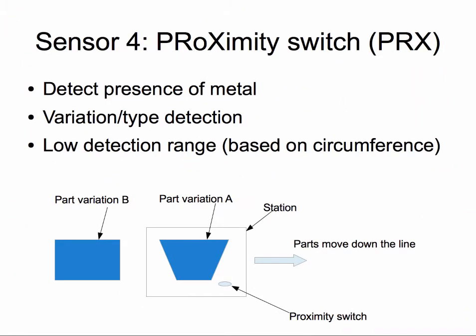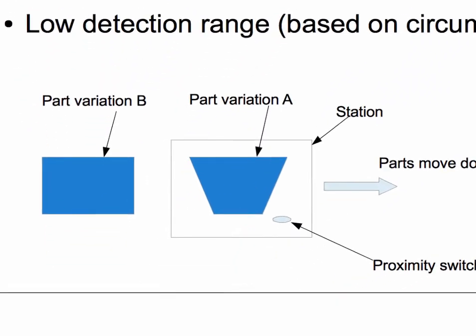The fourth one is the proximity switch, which detects metal when it is close. The range can be up to approximately 30 millimeters and is based on the circumference of the sensor. It is great for detecting the presence of cards or parts in systems before it operates. It can also be used to detect different variations of parts in static assembly stations. An example of such an application is shown here.